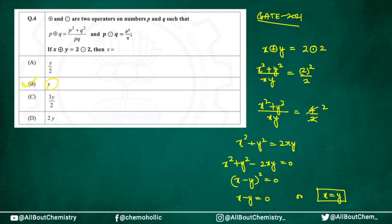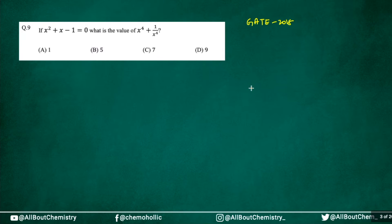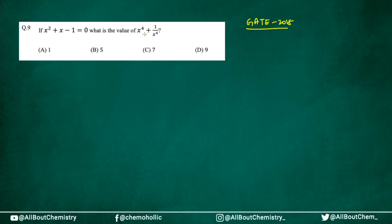All you have to do is follow whatever is given to you. I'll give some related questions at the end of the video, but let's take another type. This next question was a very good one — it was asked in the gate 2018 exam. It says: if x² + x − 1 = 0, what is the value of x⁴ + 1/x⁴?